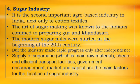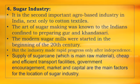What are the factors essential for establishment of sugar industry? This can be an important question. The factors required for sugar industry are: supply of sugarcane as the main raw material, cheap and efficient transport facilities, government encouragement, and availability of market and capital. These are the main factors for the location of sugar industry.